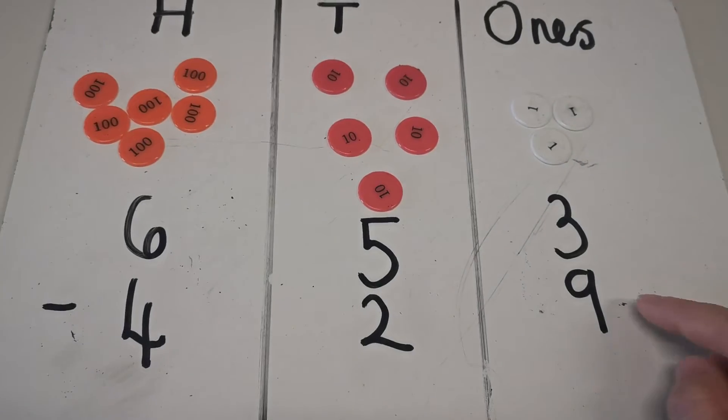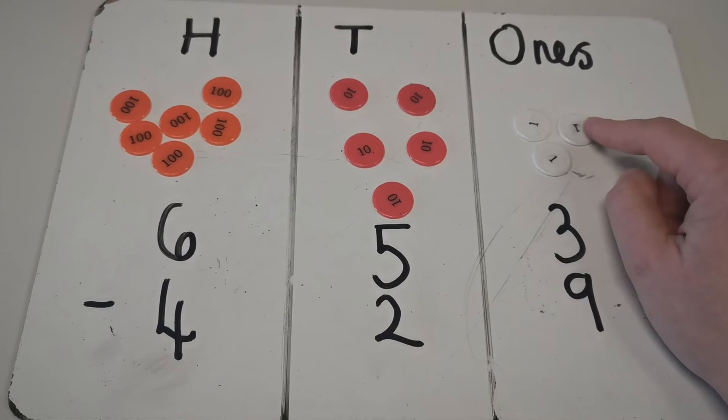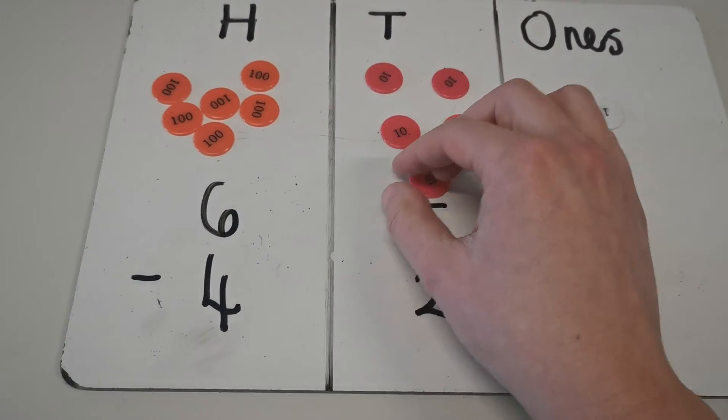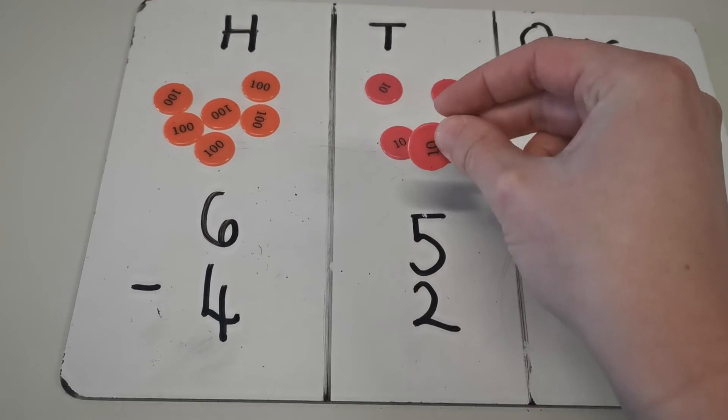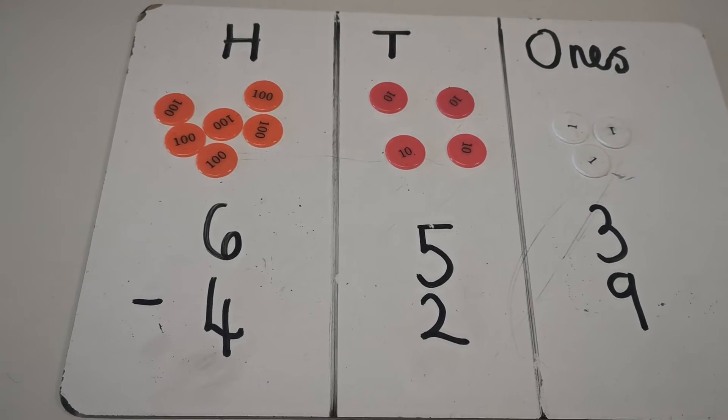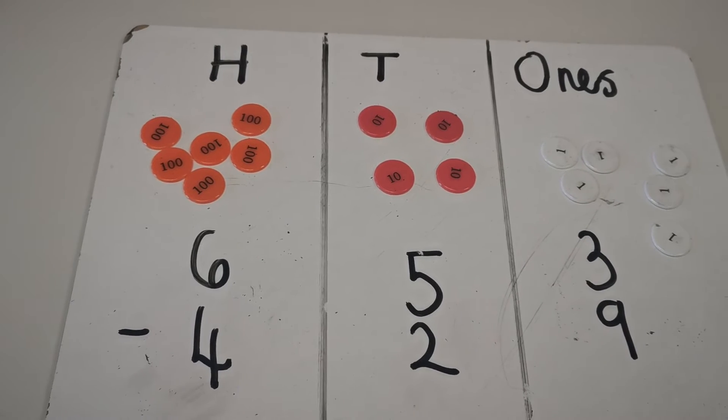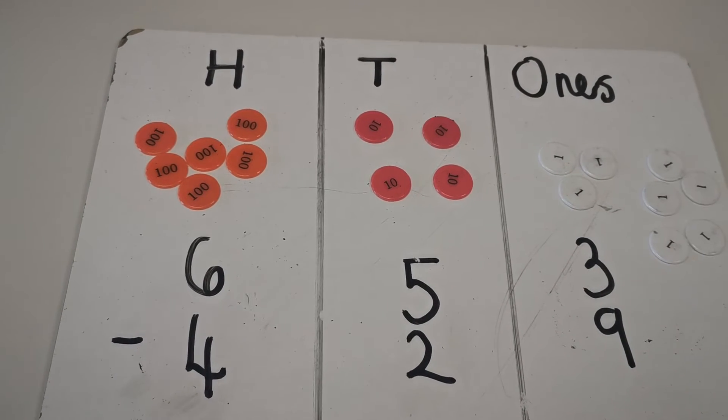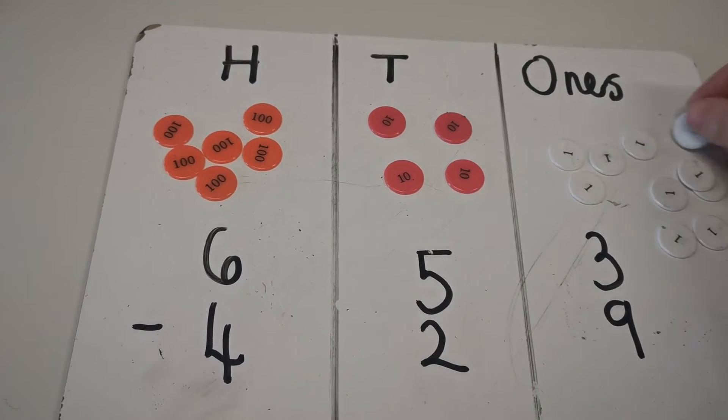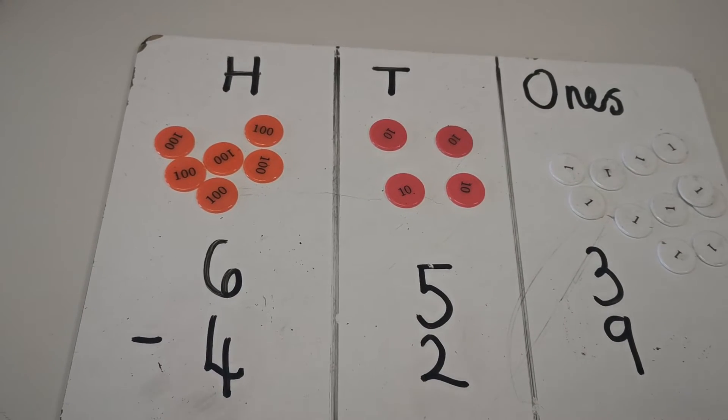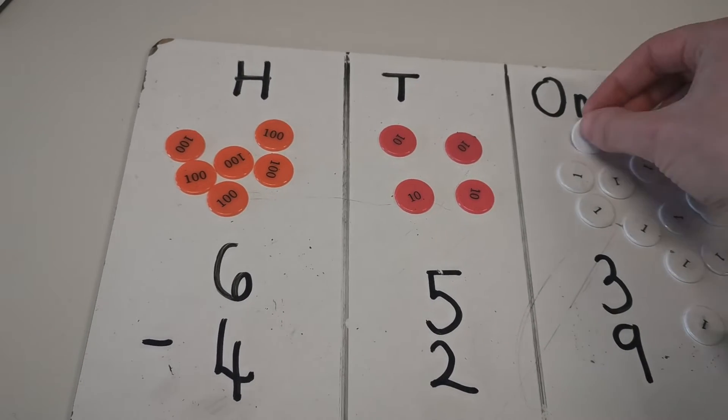So what I'm going to do is take one of these tens and exchange it for 10 ones because that's exactly the same, isn't it? 1, 2, 3, 4, 5, 6, 7, 8, 9, 10.